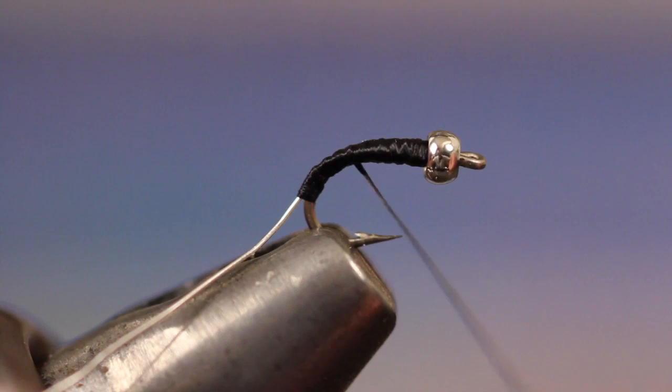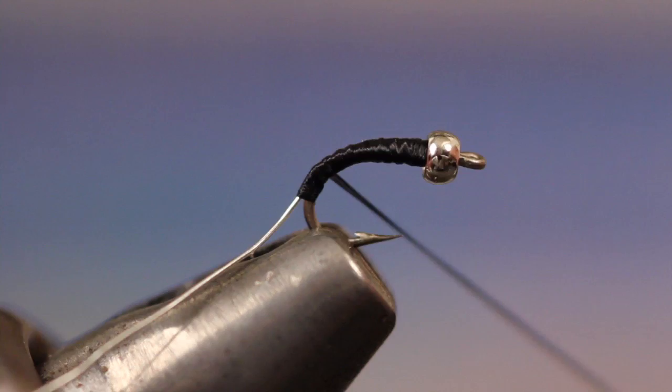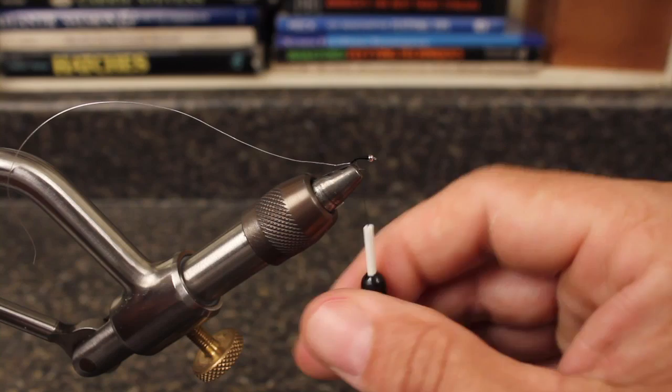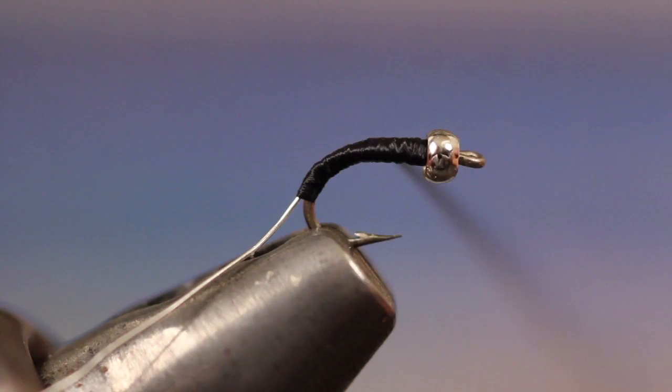As you can see, the flattened thread helps to smooth out lumps and bumps. During the process, you're going to need to spin the bobbin counterclockwise a number of times in order to keep the thread flat. As you can imagine, this process of tapering the body and then applying flattened thread wraps will work on other patterns as well.